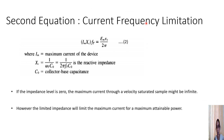The second equation is the current-frequency limitation. In the first equation we had Vm·ft = Em·Vs/(2π). The maximum voltage Vm can be written as Im × Xc, where Xc is the reactive impedance 1/(2π·ft·C0), and C0 is the collector-to-base capacitance. Substituting into the first equation gives the second equation for current-frequency limitation. If the impedance level were zero, the maximum current through a velocity-saturated sample would be infinite; however, a limited impedance constrains maximum current and thus maximum attainable power.